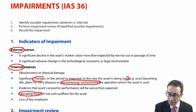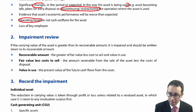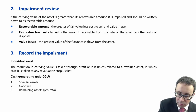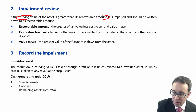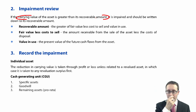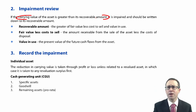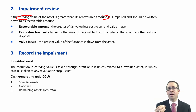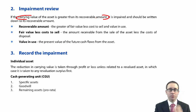Once you've got the indicators, you then perform the impairment review itself. The key point is that we look at the carrying value — if it is greater than the recoverable amount, then it is impaired. You impair it from its carrying value down to its recoverable amount. We've already seen this with a subsidiary as a cash generating unit, comparing its carrying value to its recoverable amount.